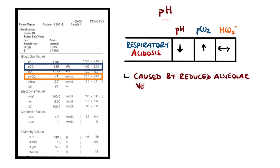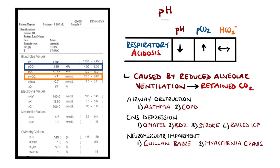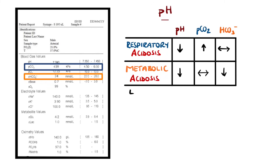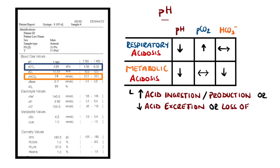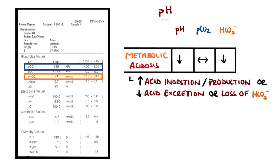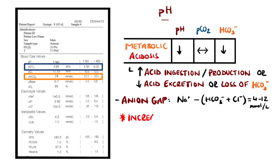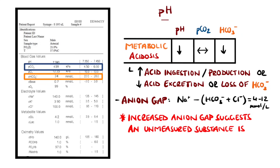Respiratory acidosis is caused by a reduction in ventilation of the alveoli, leading to retention of carbon dioxide. Metabolic acidosis is caused by either acid ingestion, increased acid production, or a loss of bicarbonate or reduced excretion of acids. An important factor in metabolic acidosis is the anion gap, which is the difference between the amount of positive and negative ions in the blood, given by sodium minus chloride and bicarbonate. The normal anion gap is approximately 4 to 12 millimoles per litre, and is mostly caused by albumin, which is not measured on the ABG. If the value is higher than expected, it suggests that another unmeasured substance is causing the acidosis.